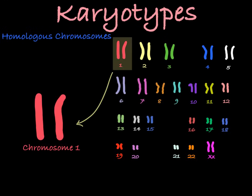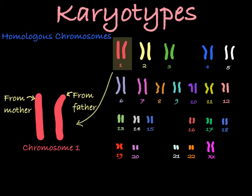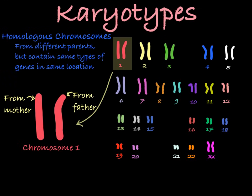Each person has two of each type of chromosome — one donated in the egg from their mother, and one donated in the sperm from their father. So we can see we have two chromosome number ones, two chromosome number twos, and so on and so forth. While these two chromosomes came from different parents, they contain the same kinds of genes in the same locations. The chromosomes in a pair like this are said to be homologous chromosomes — homo meaning same — because they contain the same genes in the same locus.